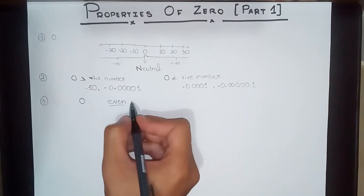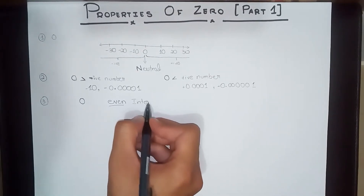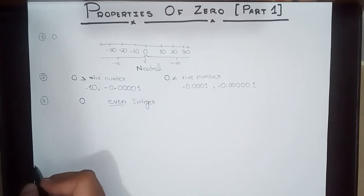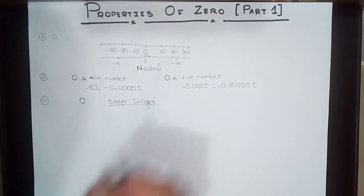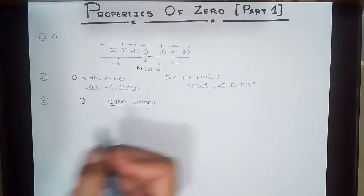On to the third property: zero is an even number, and also an integer — so zero is an even integer.